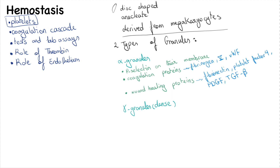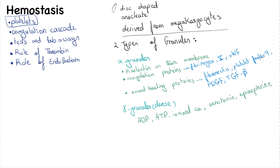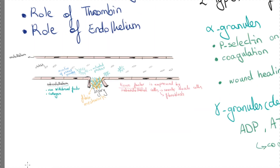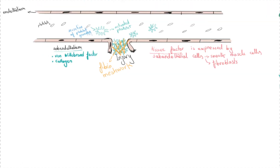The dense or delta granules contain adenosine diphosphate (ADP), adenosine triphosphate (ATP), ionized calcium, serotonin, and epinephrine. The functions of these proteins in the dense granules are mostly related to the coagulation cascade.